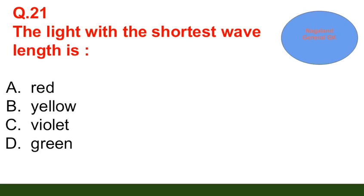Question number 21: The light with the shortest wavelength is — option A: red; option B: yellow; option C: violet; option D: green. The correct answer is option C — violet.